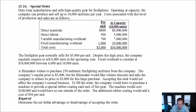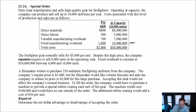Duty Gear manufactures and sells high quality gear for firefighters. Operating at capacity, the company can produce and sell up to 10,000 uniforms per year. Costs associated with this level of production and sales are given. The firefighter gear normally sells for $5,000 a unit, and the company expects to sell 8,000 units in the upcoming year. Fixed overhead is constant at $10 million between 6,000 and 10,000 units. That's a general cue when thinking of relevant costs — if something's not going to change, no matter how much I make, it's probably not relevant to my decision.